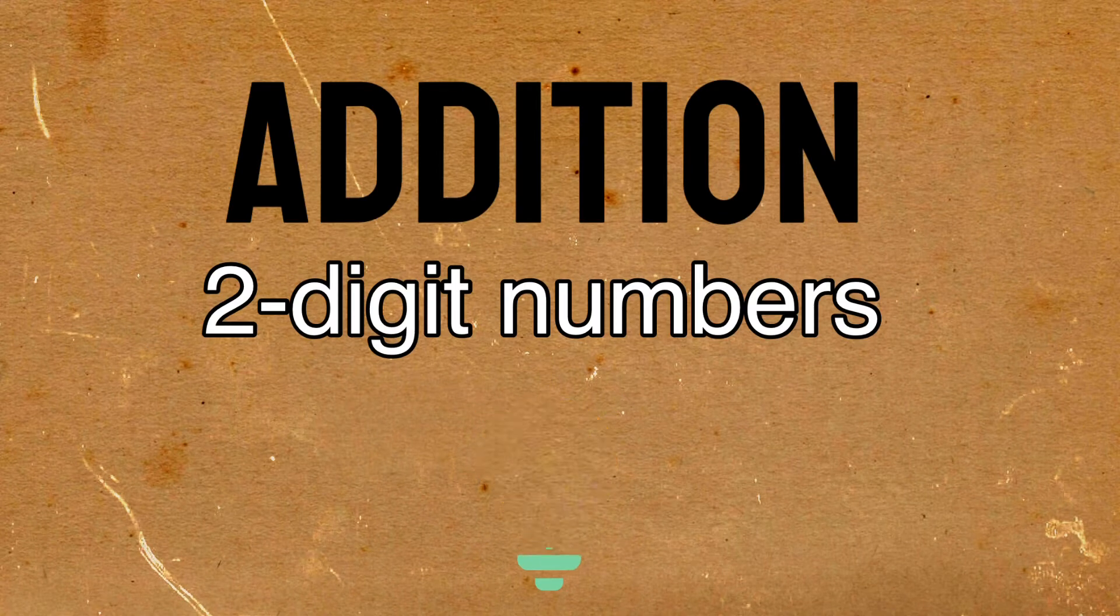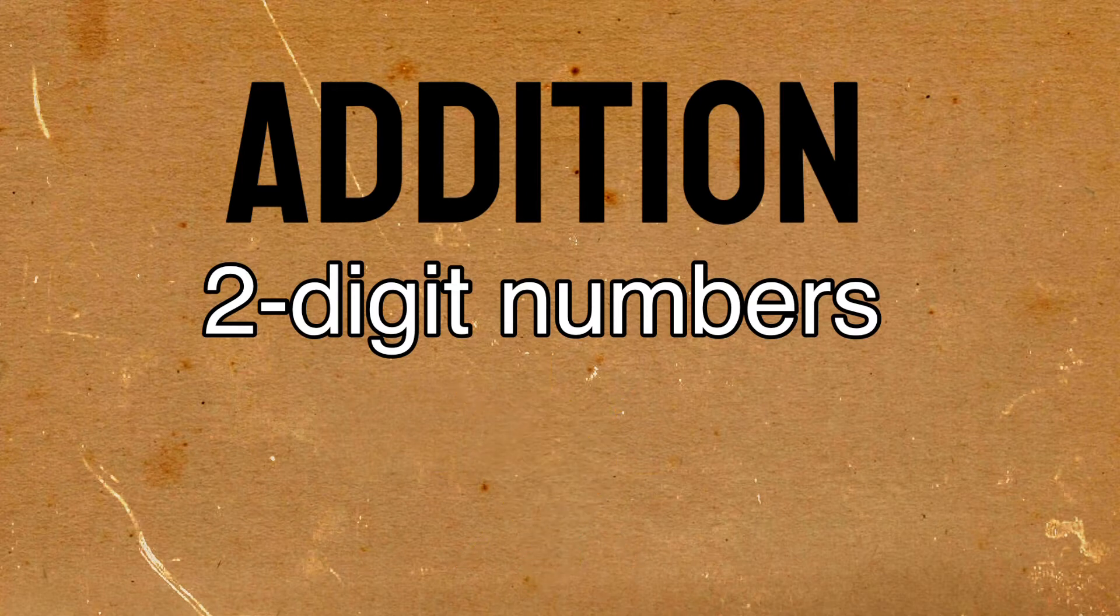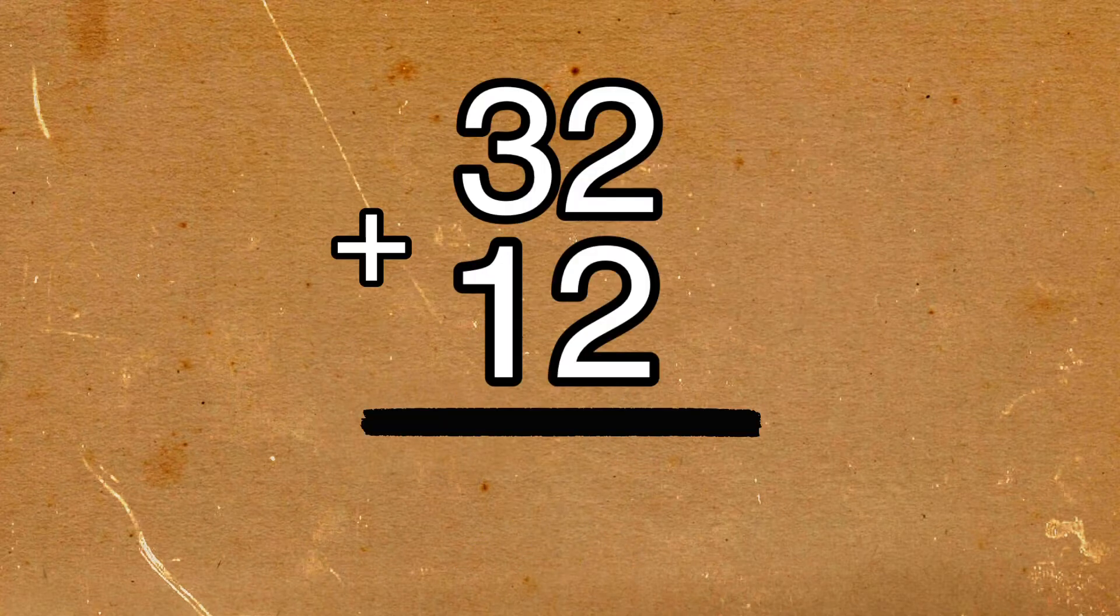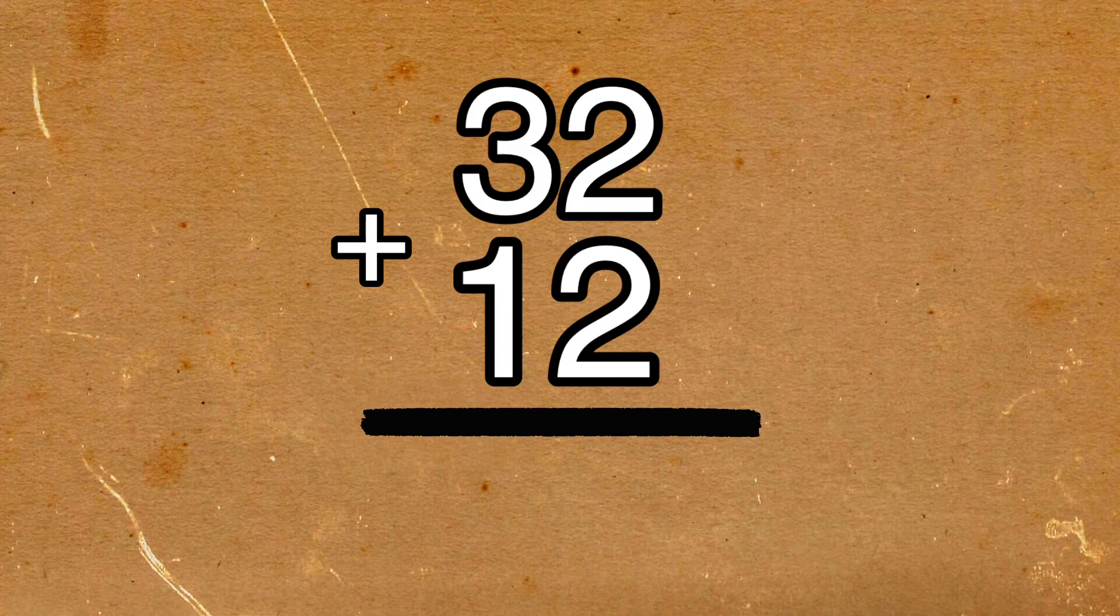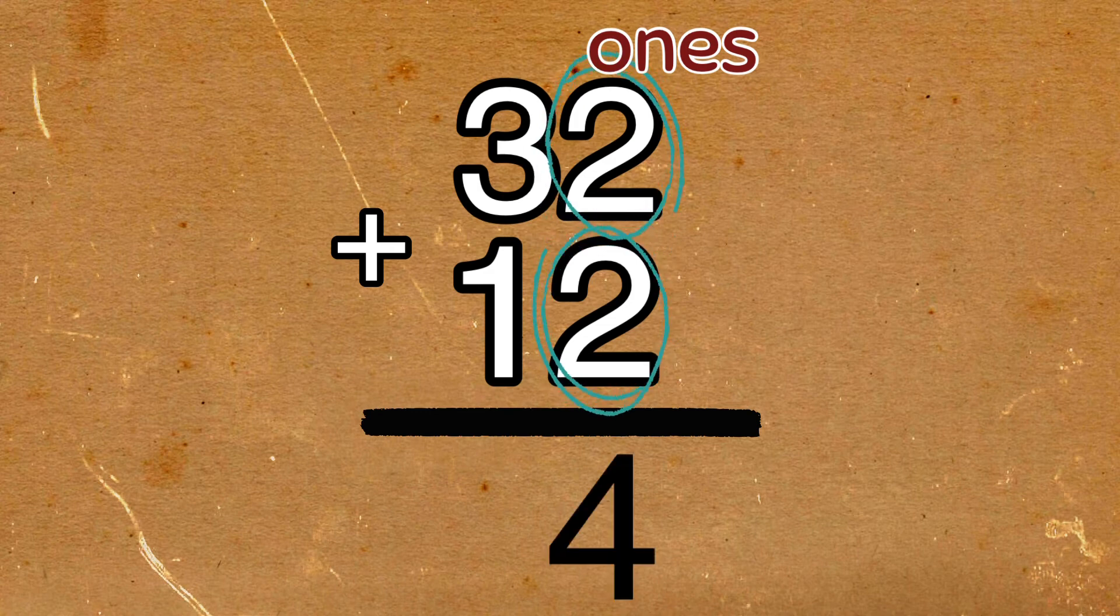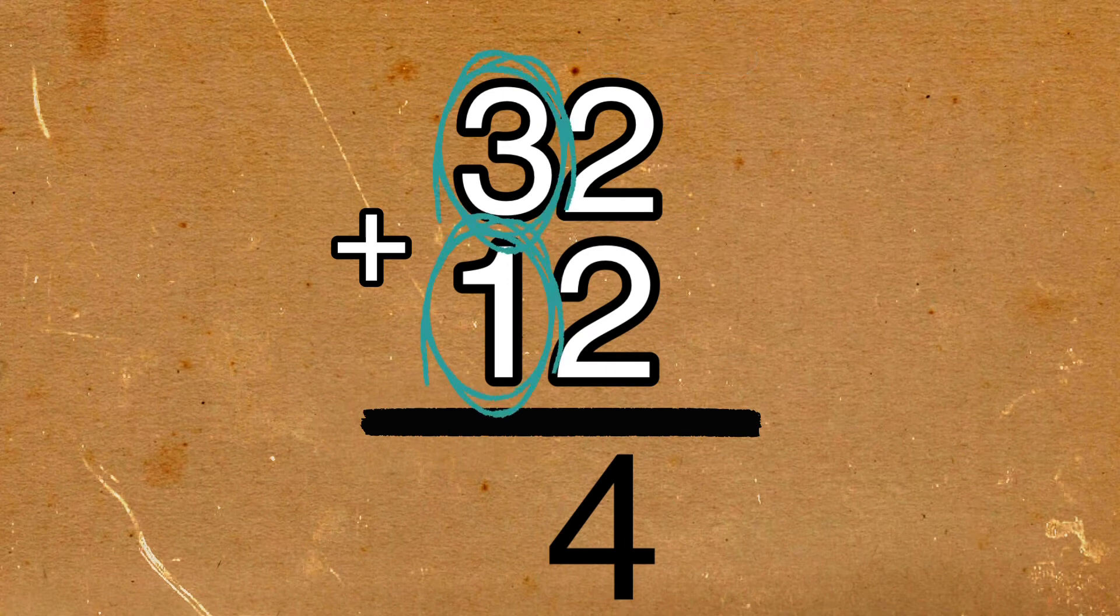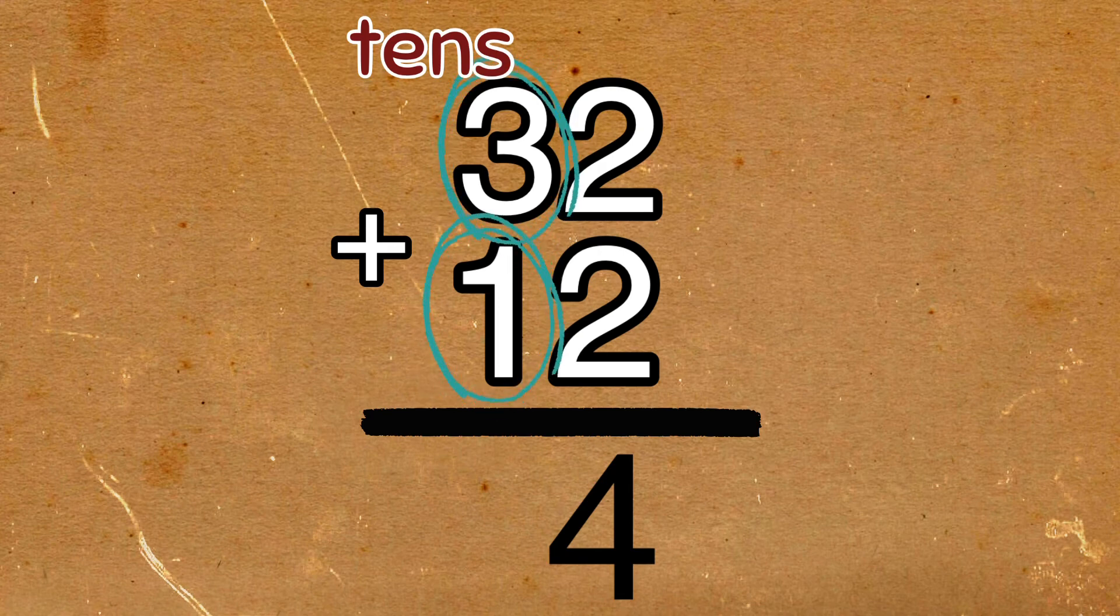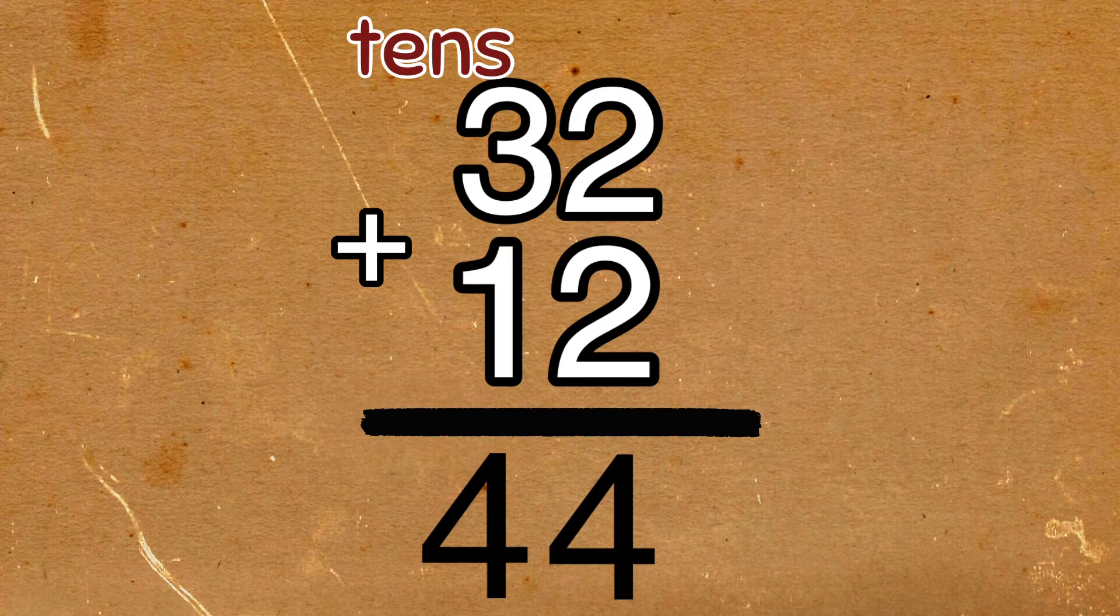Knowing the place value of each digit will also be helpful when you are adding two-digit numbers. Let's look at this example. Remember, digits of the same place value should always be aligned. The number 2 on top and the number 2 below are part of the ones place. 2 plus 2 is equal to 4. On the other hand, number 3 and number 1 are part of the tens place. 3 plus 1 is equal to 4. For this example, the final answer is 44.